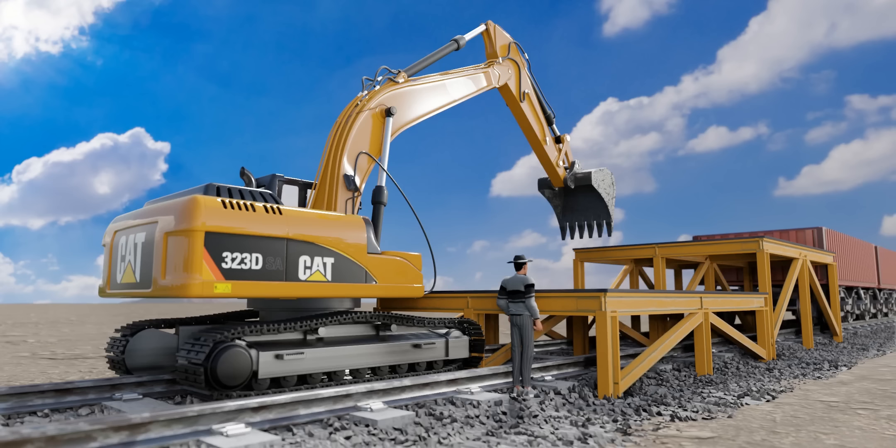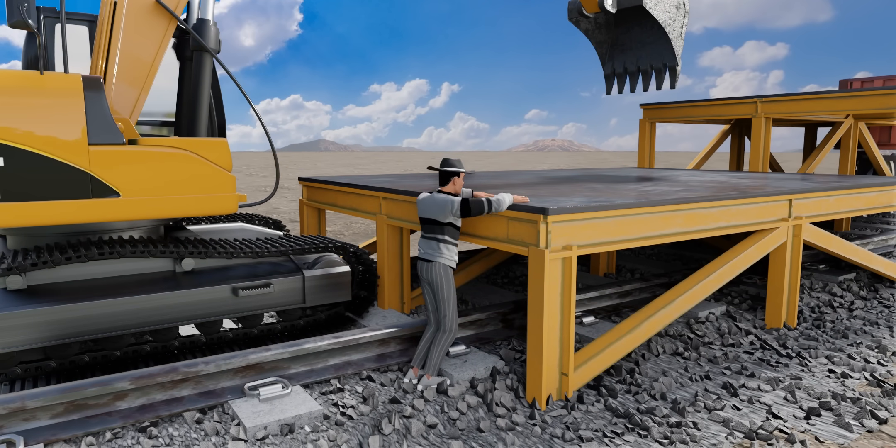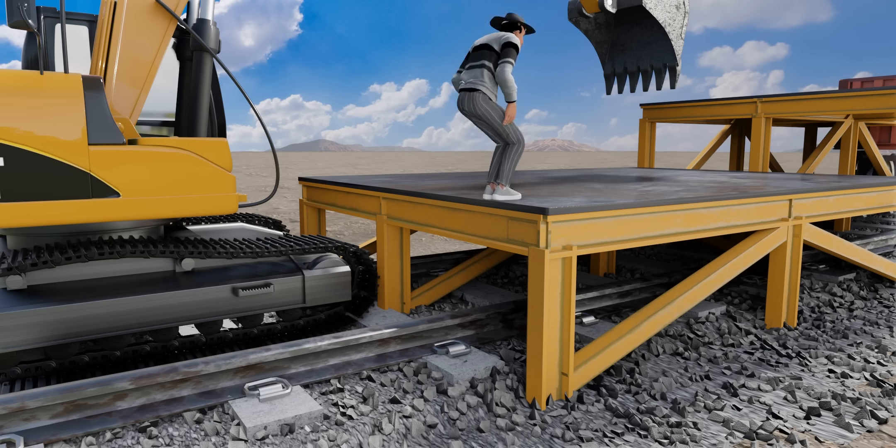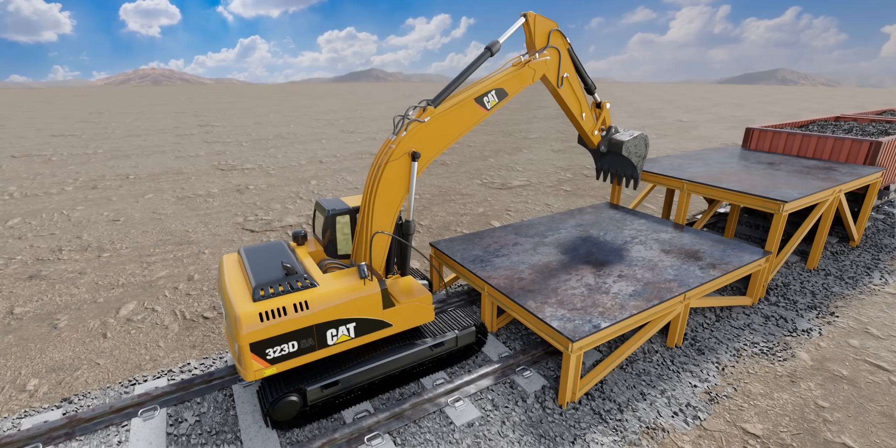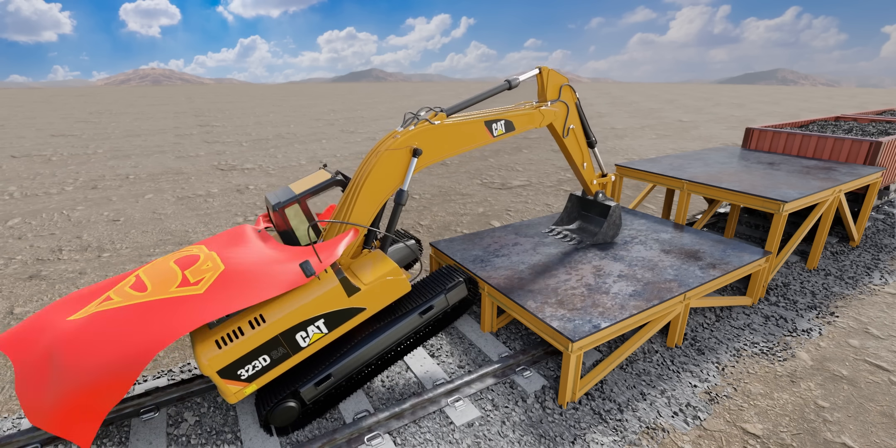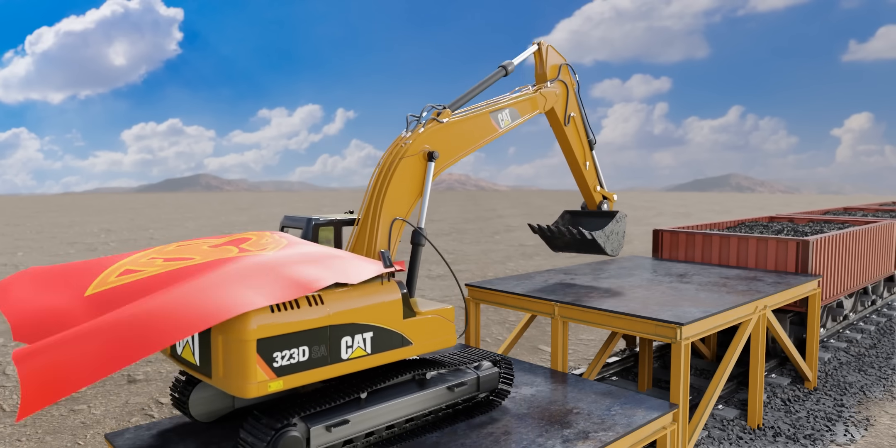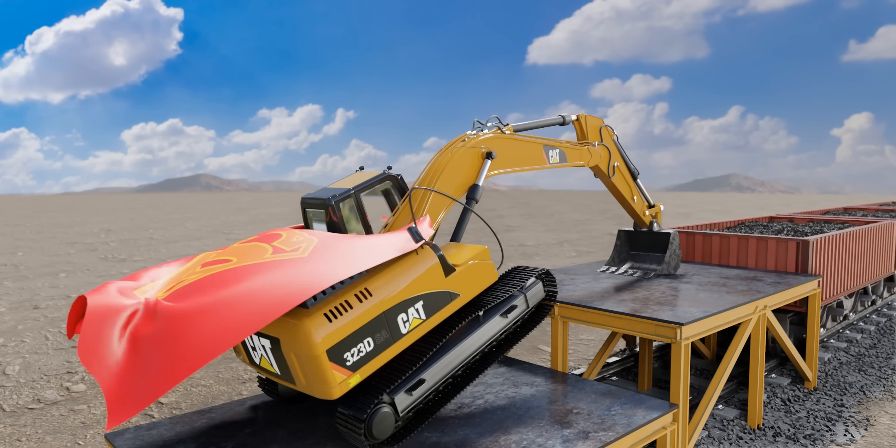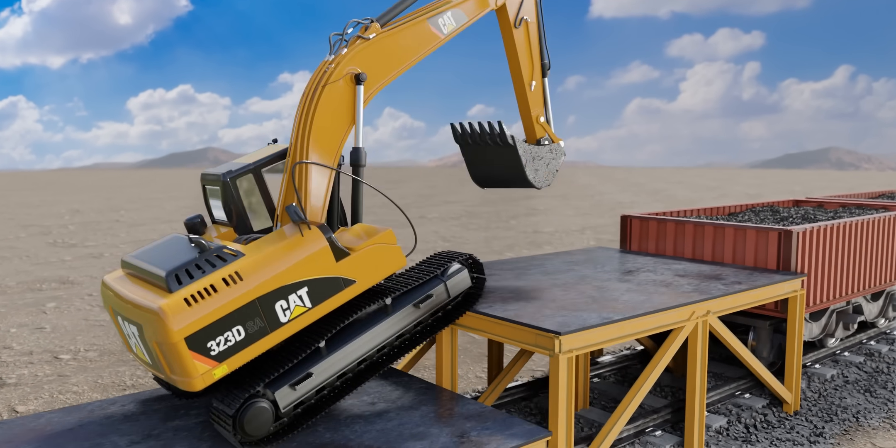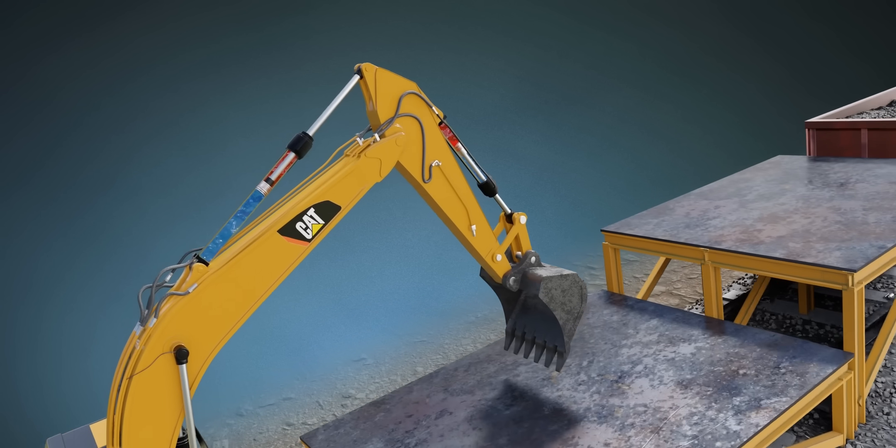This excavator driver is struggling to unload material from a wagon. The best solution is to keep the excavator on this raised platform. In this new elevated position, the excavator does its job perfectly. However, the question is, how can we make the excavator climb up such big steps? As humans, when we want to climb up a big step, we fix our arms on the step and climb it. The excavator must do the same thing.